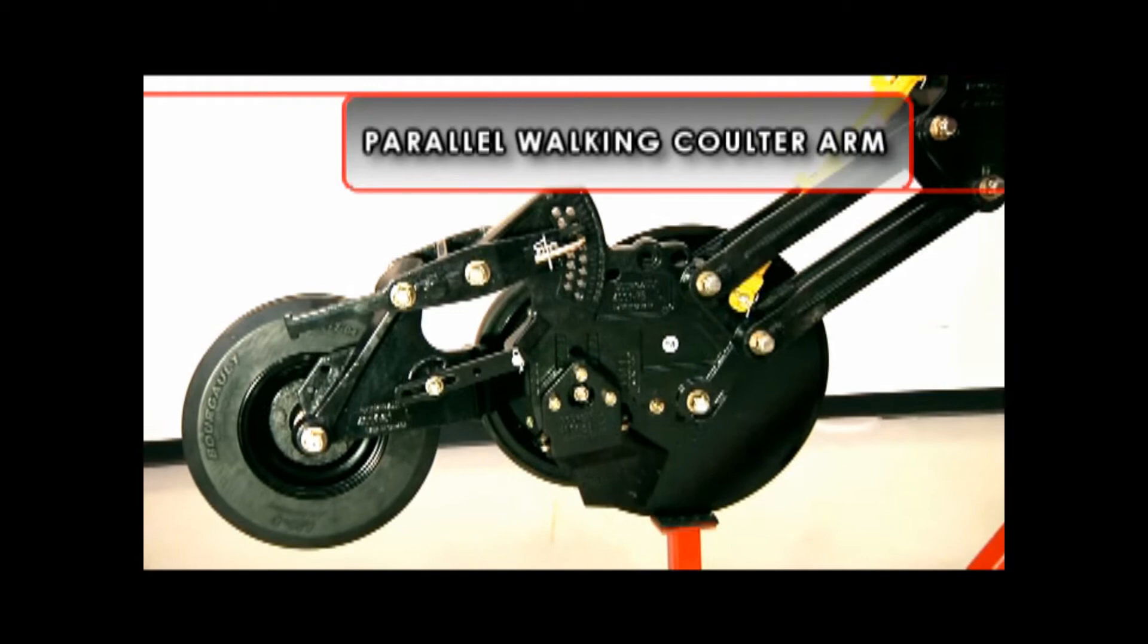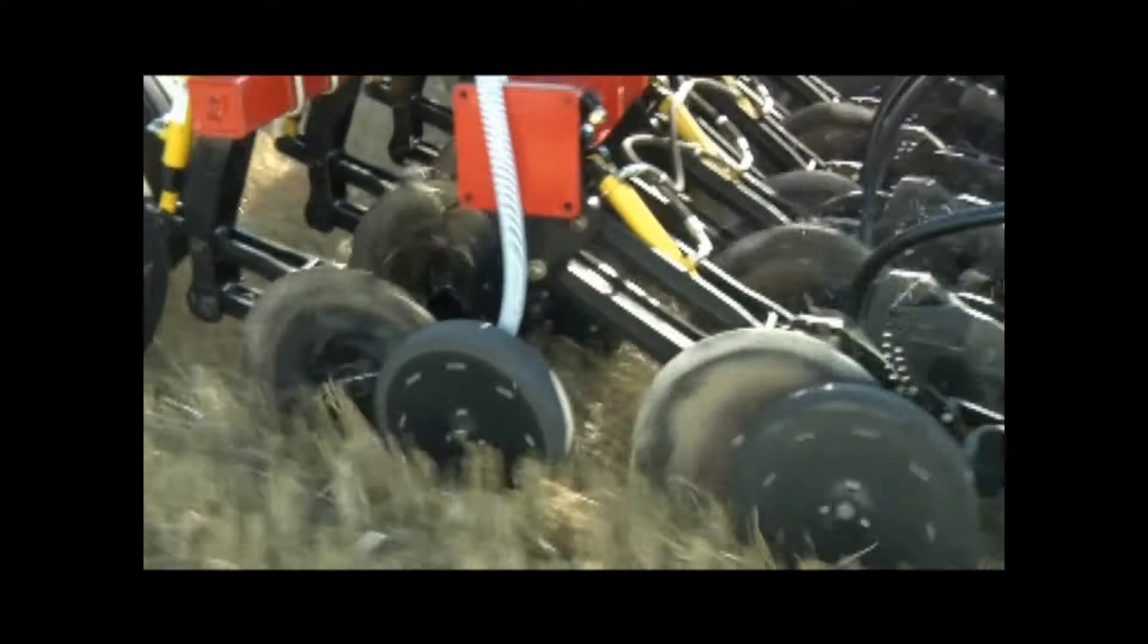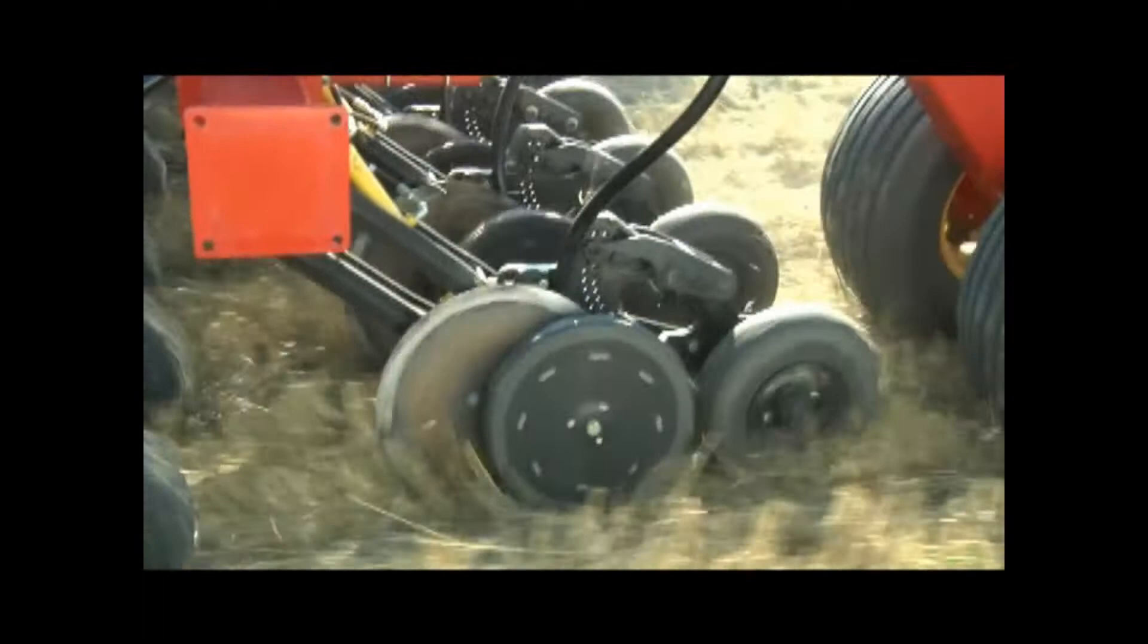The 3710 independent coulter drill is designed around the innovative parallel walking coulter arm. The design of this seed opener provides a wide range of advantages for producers, including independent depth control, consistent seed placement, and on-the-go packing adjustment.